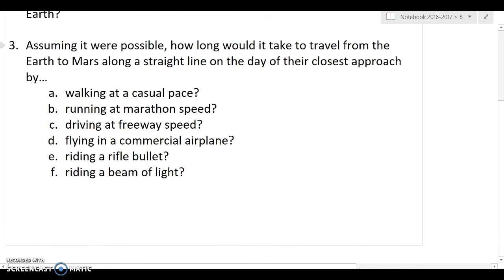Question three is incredibly difficult. Good luck with this. Assuming it were possible, how long would it take to travel from the Earth to Mars along a straight line on the day of their closest approach? By A, B, C, D, E, and F. A set of different ways of travelling between Earth and Mars.